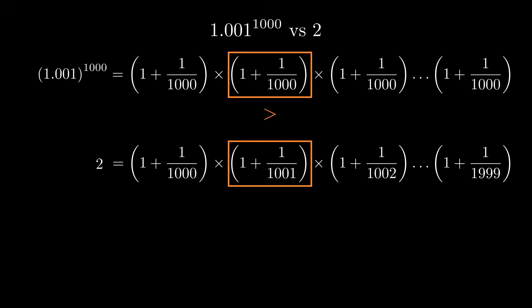1 over 1,000 is slightly larger than 1 over 1,001. And 1 over 1,000 is slightly larger than 1 over 1,002. And this would continue all the way down our fraction.